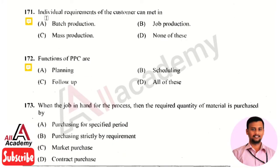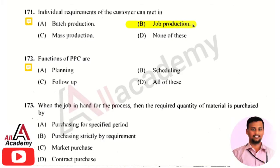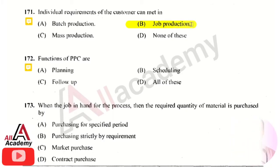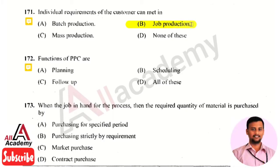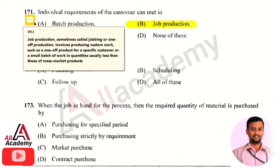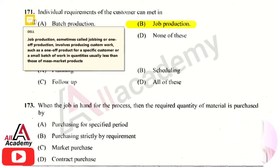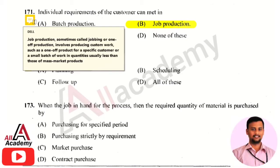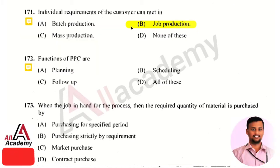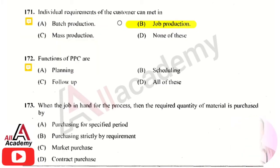The next question is: the individual requirement of each customer can be met in which production type? The right answer is job production. In job production, the individual requirement of each customer can be easily met. Job production involves producing work for a specific customer — one product per specific customer, based on the customer's requirement.